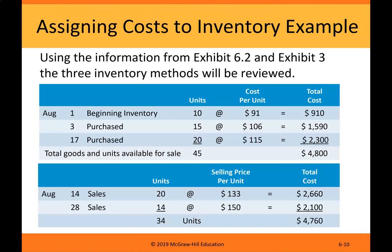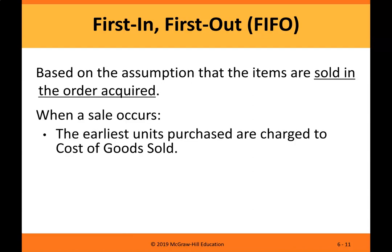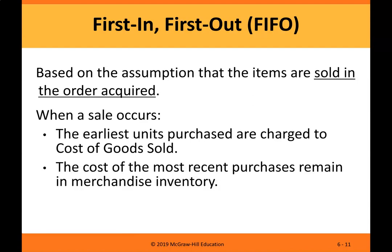Assigning costs to inventory example. Using the information from Exhibit 6.2 and Exhibit 3, the three inventory methods will be reviewed. First in, first out (FIFO) is based on the assumption that items are sold in the order acquired. When a sale occurs, the earliest units purchased are charged to cost of goods sold, and the cost of the most recent purchases remains in merchandise inventory.